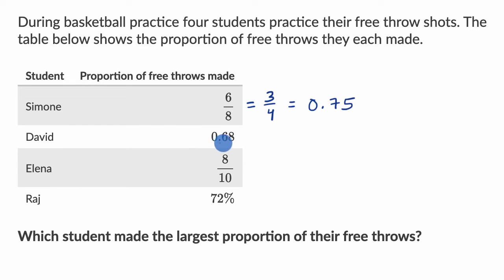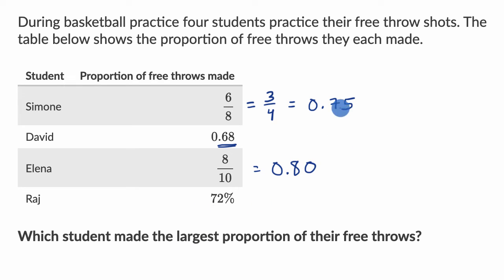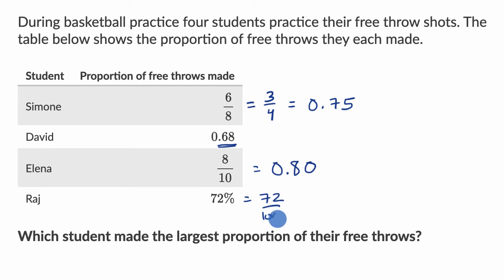David's free throw proportion is already there as a decimal. Elena's eight-tenths is 0.8, or we could say 0.80 if we want to express everything in terms of hundredths. And then last but not least, Raj is 72%. That's 72 per hundred — 72% is 72 over 100, or 0.72, or 72 hundredths.